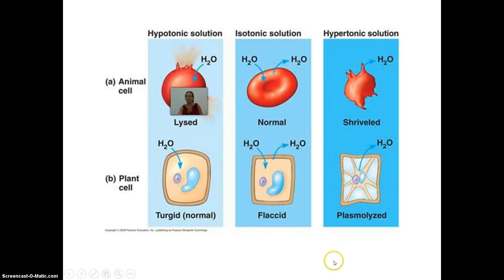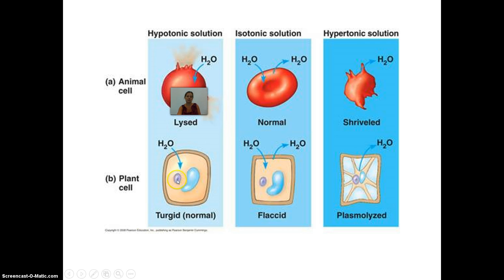On your notes organizer, note what happens to a cell in each solution. In an isotonic solution, equal amounts of water go into and out of the cell — this is normal and ideal, shown here with a red blood cell and a plant cell. In a hypotonic solution, water is high outside so it travels inside, causing the cell to swell and possibly burst. For plant cells, this can be normal since plants want to store lots of water. In a hypertonic solution, water is high inside and low outside, so water leaves the cell, causing it to shrivel up.